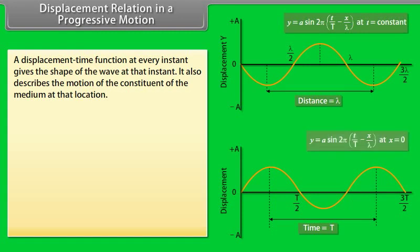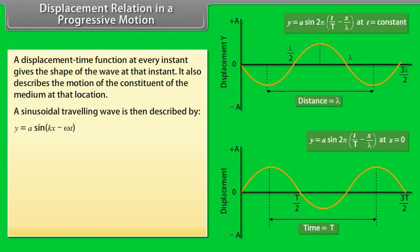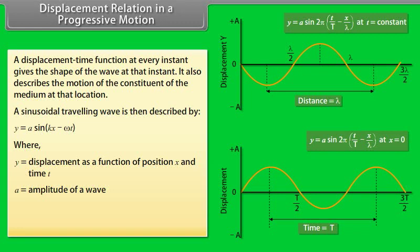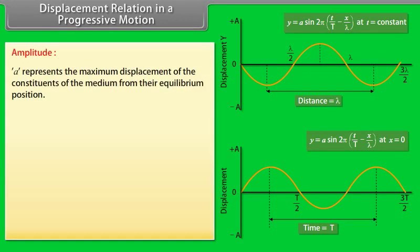Displacement relation in a progressive motion: a displacement-time function at every instant gives the shape of the wave at that instant. It also describes the motion of the constituents of the medium at that location. A sinusoidal traveling wave is described by y = a sin(kx − ωt), where y is displacement as a function of position x at time t, a is the amplitude of the wave, ω is the angular frequency, and k is the angular wave number. Amplitude a represents the maximum displacement of the constituents of the medium from their equilibrium position and is called the amplitude of the wave.